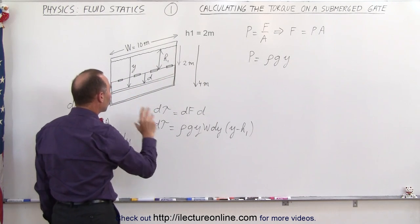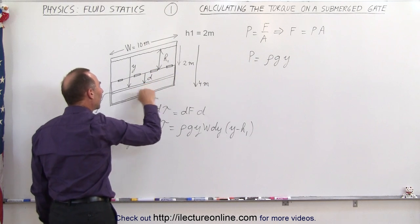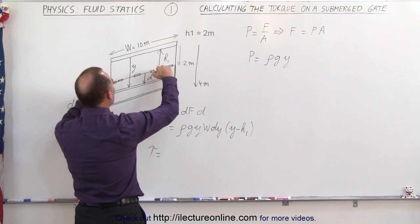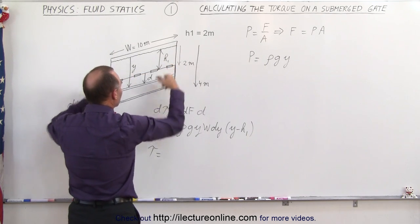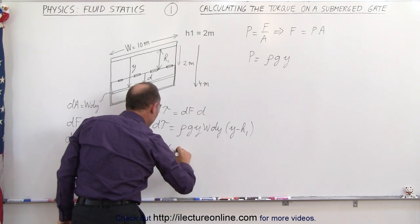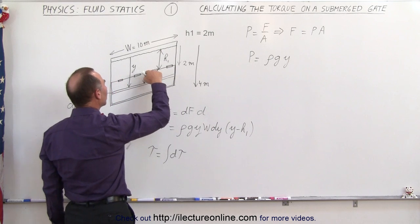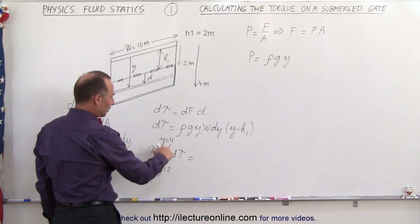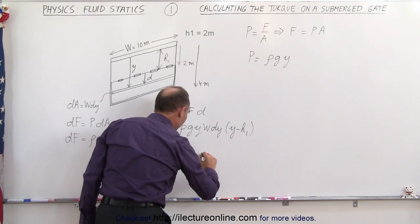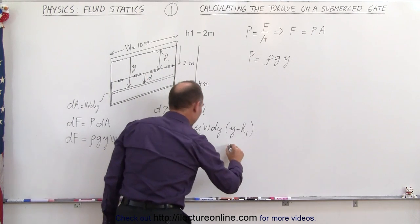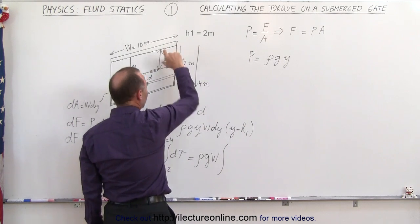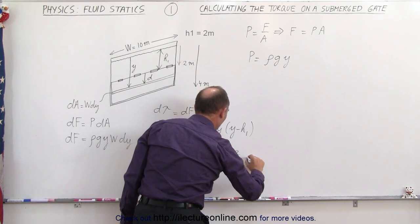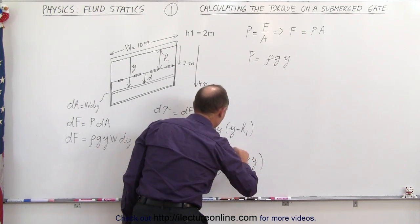So now we have an expression for the torque caused by that small strip. To find the total torque, we integrate all the little strips — summing up all the contributions of dτ, the force times the distance from the hinge. We integrate dτ from Y equals 2 to Y equals 4. The constants ρ, g, and W come outside the integral, leaving the integral of Y times (Y minus H1). Since H1 equals 2, we get Y squared minus 2Y, times dY.